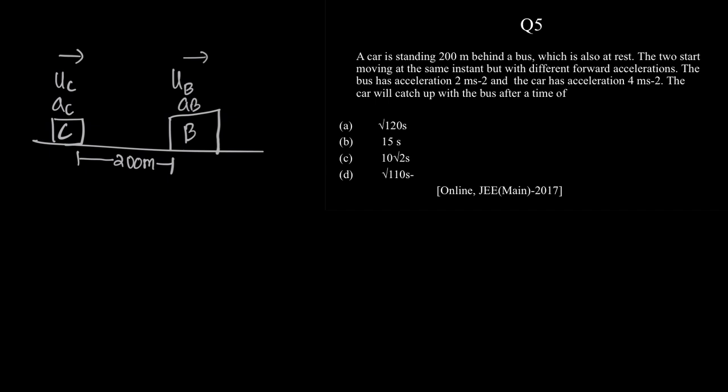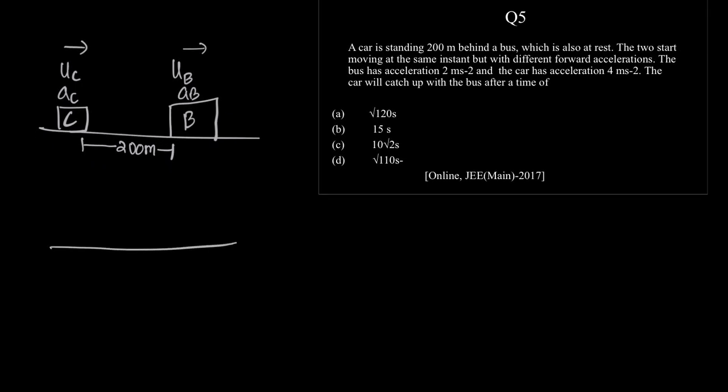What is the concept of relative motion? What we can do is, instead of considering these two bodies moving in a straight line at two different points, we can combine them together. And then say that instead of car is chasing bus, we can say this car is moving along with bus with an acceleration of ac with respect to b, and with speed uc with respect to b. And then it is trying to cover the distance 200m.